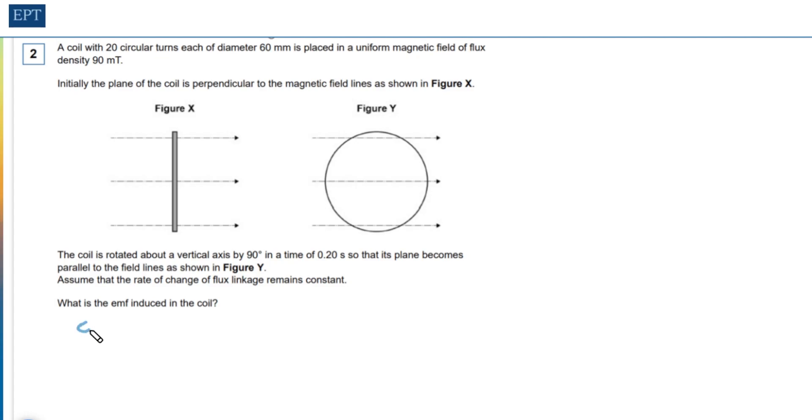We know Faraday's law tells us that the EMF induced is equal to the rate of change of flux linked, and we also know that Phi is equal to magnetic field strength B times the area of the coil.